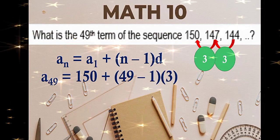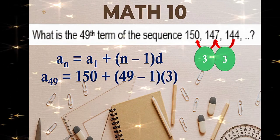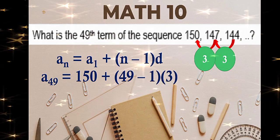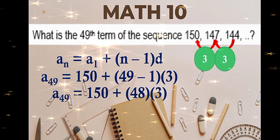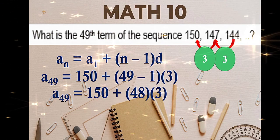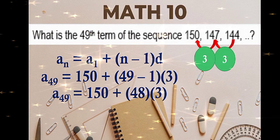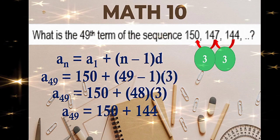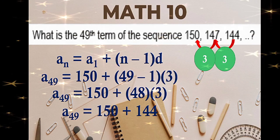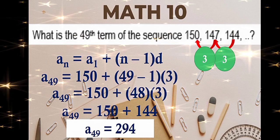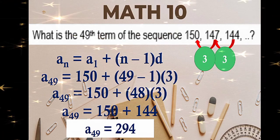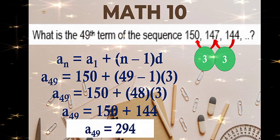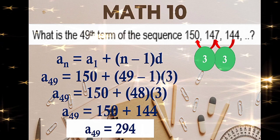Using the formula, substitution: first term is 150, n is 49, and our common difference is negative 3. Multiply: 48 times 3 is negative 144. And 150 minus 144 — the 49th term is 6. So the 49th term of the sequence is 6.